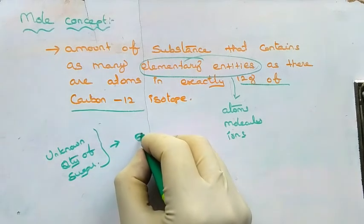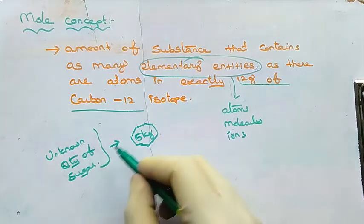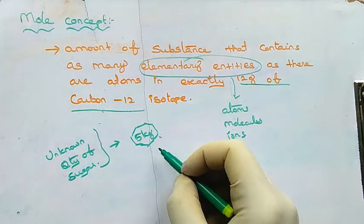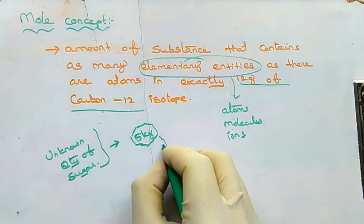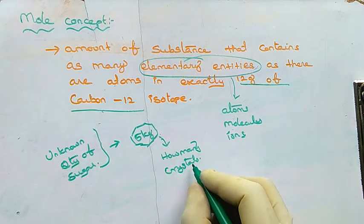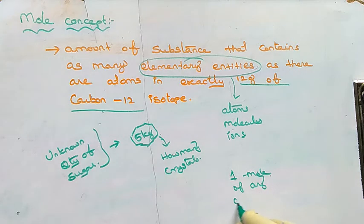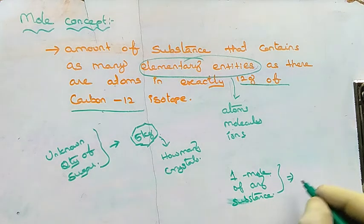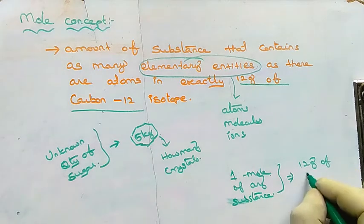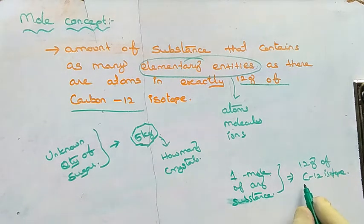To compare, in shops if you ask for 5 kg of sugar, the unknown quantity is compared with a reference 5 kg stone — here the reference sample is the carbon-12 isotope. Mole concept is like counting how many sugar crystals are in 5 kg of sugar. The number of atoms in one mole of any chemical substance equals the number of atoms in 12 grams of carbon-12 isotope.